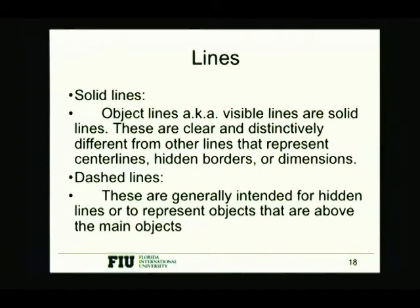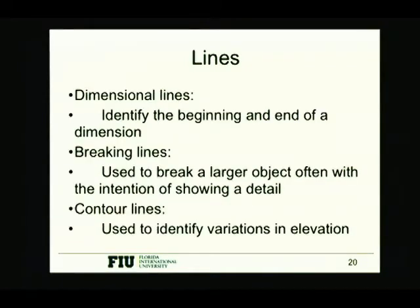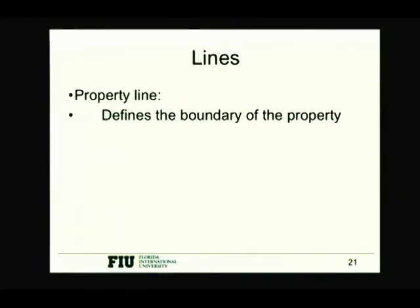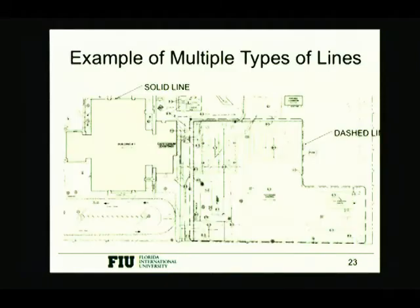There are different types of lines in drawings. Normally, solid lines are visible lines of objects that represent the edges. Dashed lines could be objects hidden from view, either above or below — those are not the main objects. There are section lines that cross over and mark sections of the drawing, center lines that represent the centerlines of items, dimension lines, break lines, contour lines, property lines — a whole bunch of different types of lines that can be used.